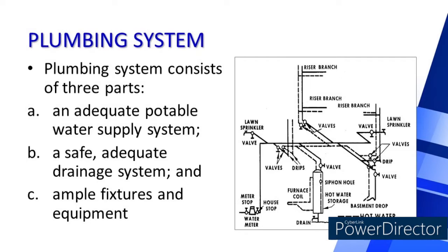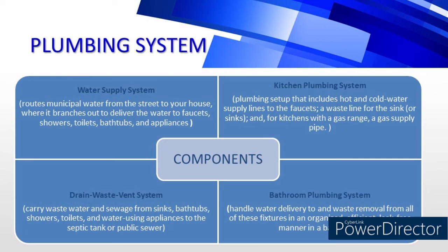Plumbing system consists of three parts: first, an adequate potable water supply system; second, a safe adequate drainage system; and third, ample fixtures and equipment. Plumbing system is divided into four components: water supply system, kitchen plumbing system, drain waste and vent system, and bathroom plumbing system.